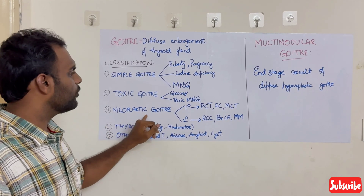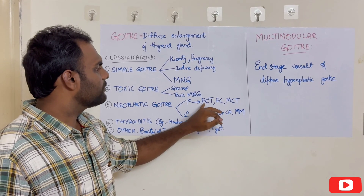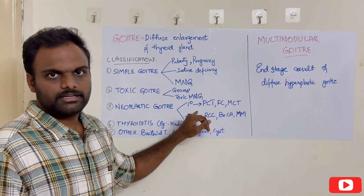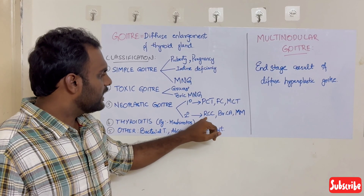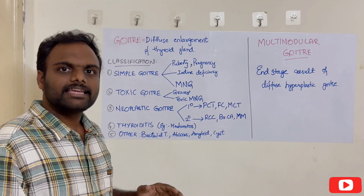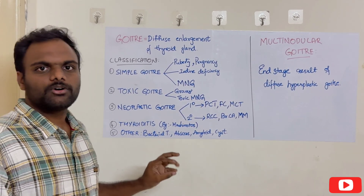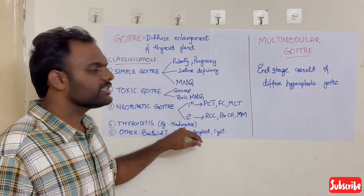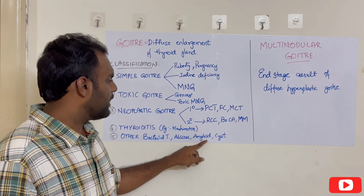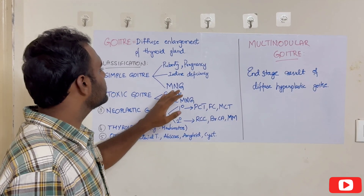The third class is neoplastic goiter — the diffuse enlargement of the gland which is either benign or malignant. Benign can be papillary carcinoma thyroid, follicular carcinoma, or medullary carcinoma thyroid, which originate in the thyroid as the primary source. But renal cell carcinoma, breast carcinoma, and malignant melanoma can send secondaries to thyroid — that is secondary neoplastic goiter. The fourth class is thyroiditis; the most common we know is Hashimoto's thyroiditis, which is autoimmune. Others can be bacterial thyroiditis, abscess of thyroid, amyloid, and cyst.